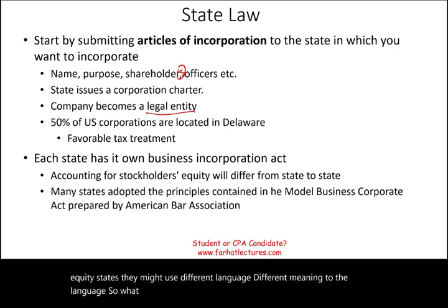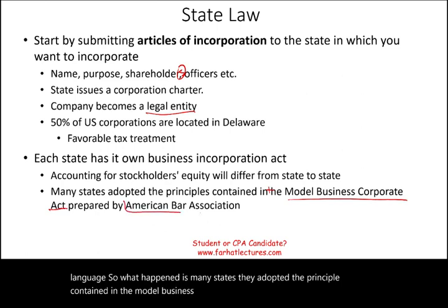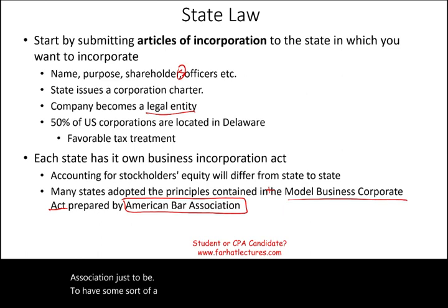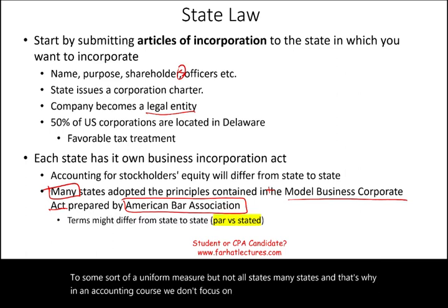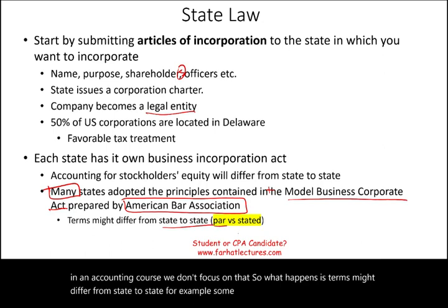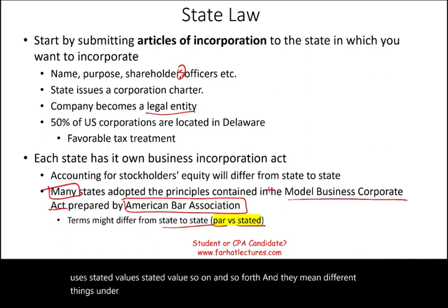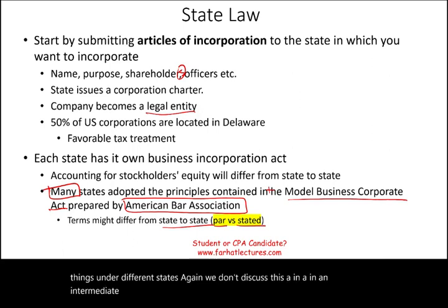Many states adopted the principles contained in the Model Business Corporate Act prepared by the American Bar Association, just to have some sort of a uniform measure — but not all states. That's why in an accounting course we don't focus on that. Terms might differ from state to state; for example, some states use par value stock, some states use stated value, and they mean different things under different states. We don't discuss this in detail in an intermediate accounting or financial accounting course.